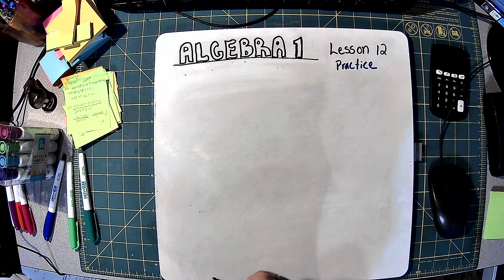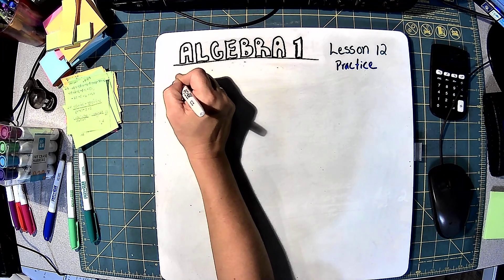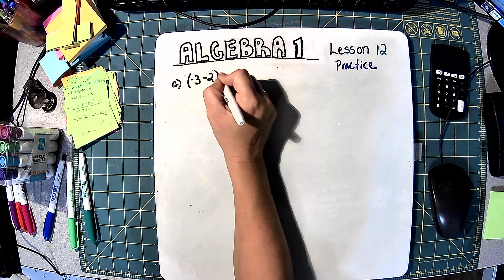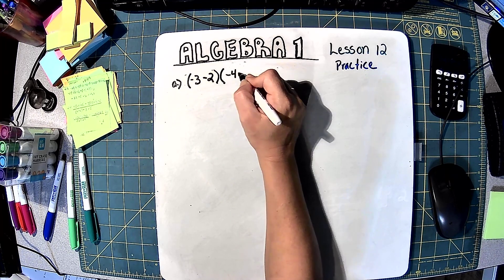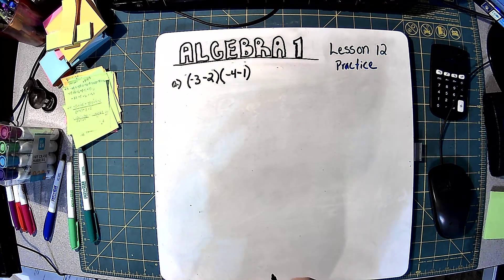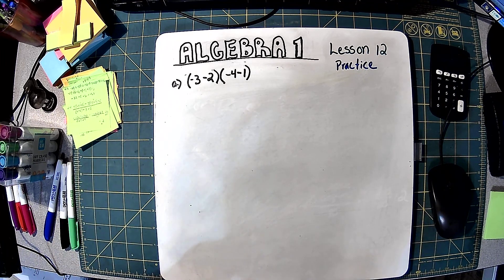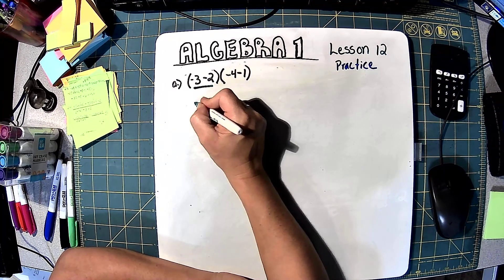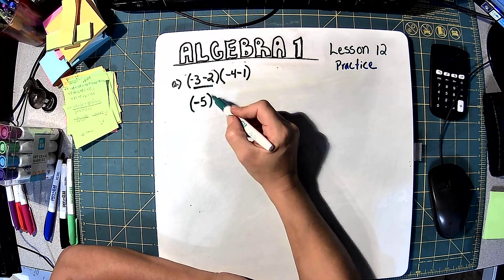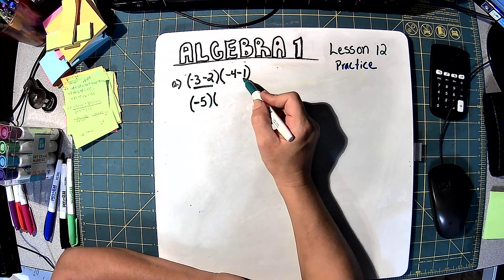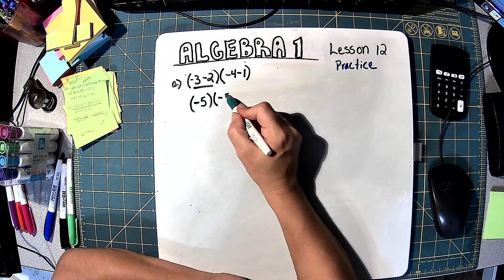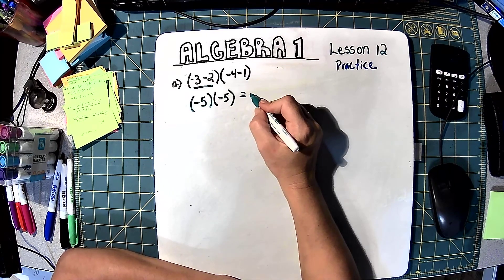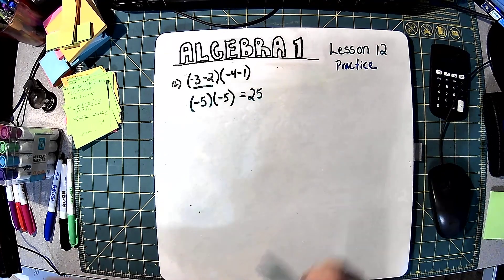Practice A is negative (3 minus 2) times negative (4 minus 1). The first thing is to work inside the parentheses. Inside the first: negative 2 and negative 3 — I owe $3, I borrowed 2 more, now I owe 5: negative 5. Then negative 4 and negative 1 — owed $4, borrowed $1 more, now I owe 5: negative 5. This just means negative 5 times negative 5, which is 25. A negative times a negative makes a positive, so the answer is positive 25.